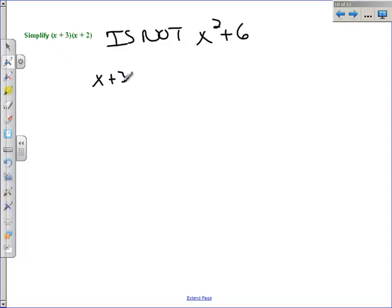I'm going to line these up like I was multiplying a 2 digit by 2 digit. And this will be 3 times 2 is 6. 2 times x is 2x. And I'm going to leave a space.